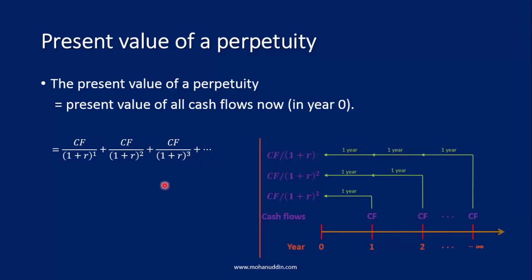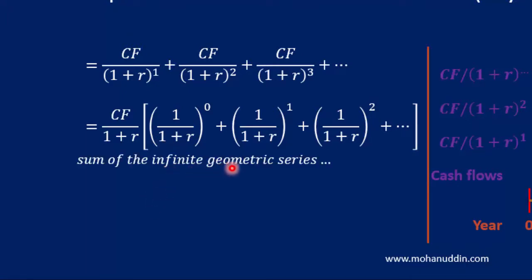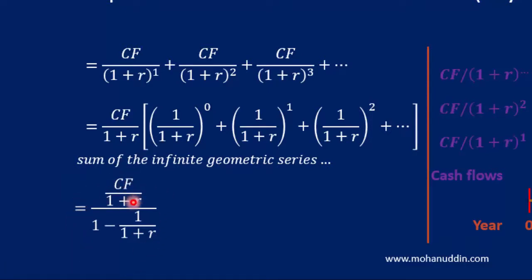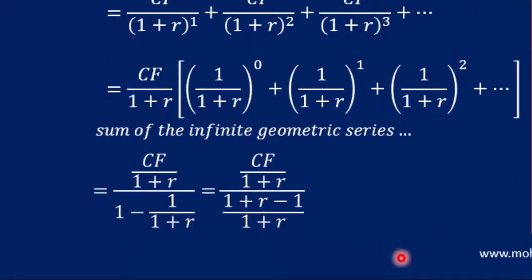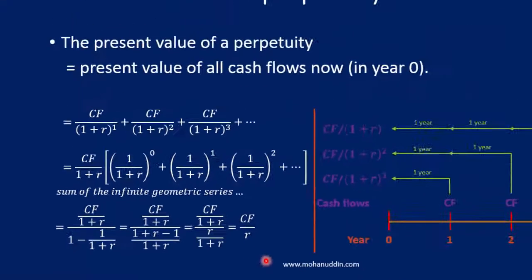If we take CF/(1+r) as the common factor, we get an infinite geometric series with exponents 0, 1, 2, 3, and so on over 1/(1+r). Applying the formula for the sum of an infinite geometric series, we get: CF/(1+r) divided by (1 − 1/(1+r)). Simplifying this expression, it becomes very simple — it reduces to CF/r after straightforward simplifications.